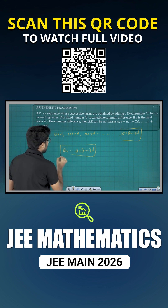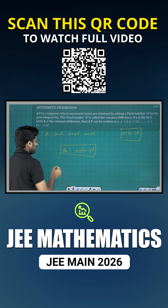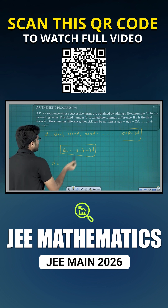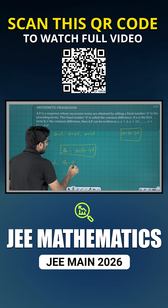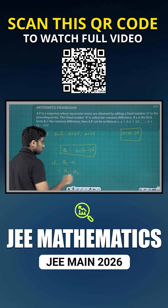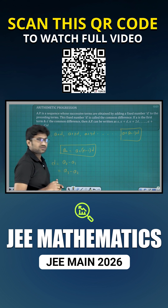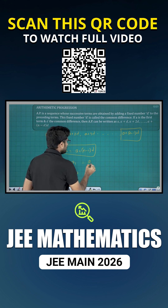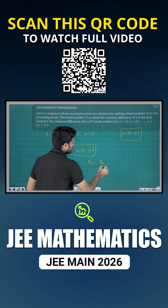Now, how do we find the common difference? The common difference D equals the second term minus the first term, or the third term minus the second term, or more generally, the Nth term minus the (N-1)th term.